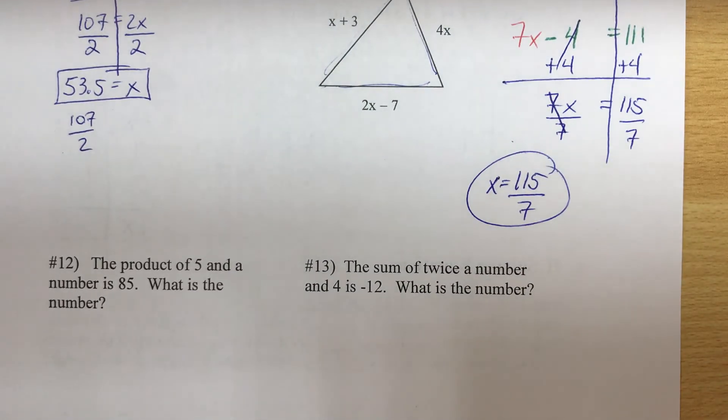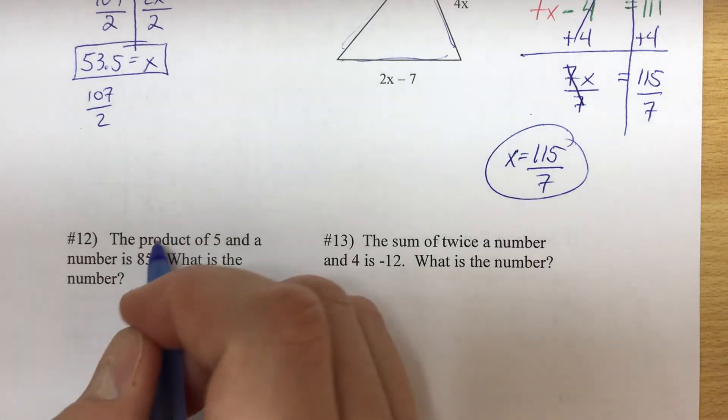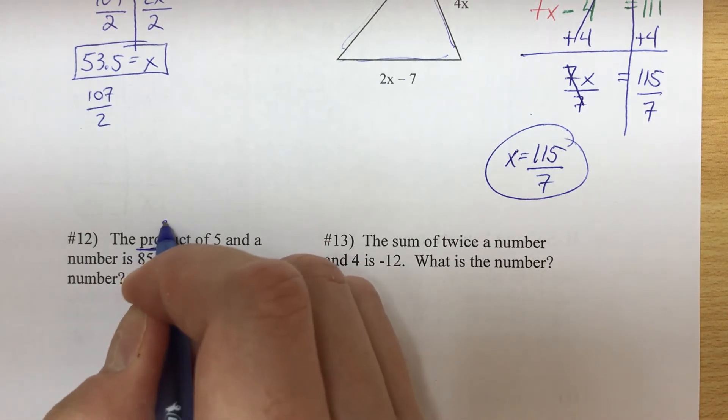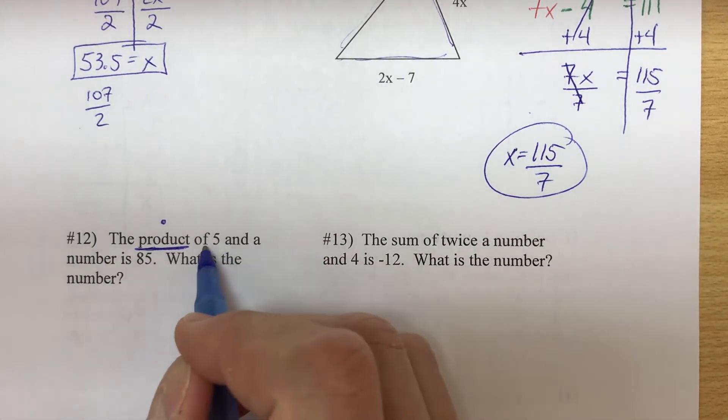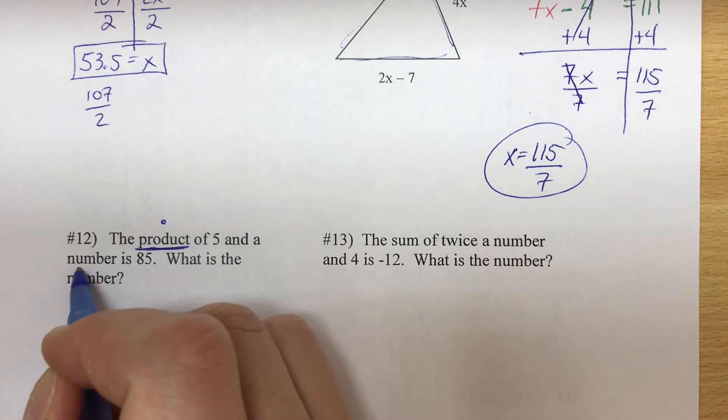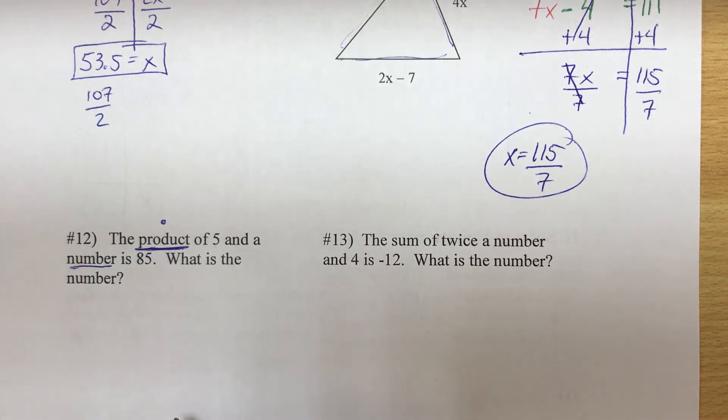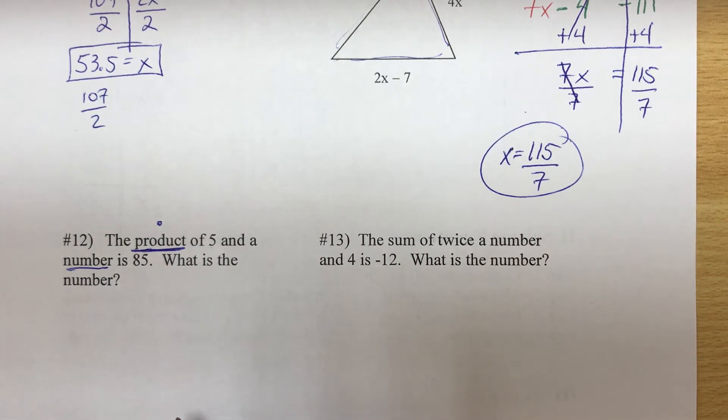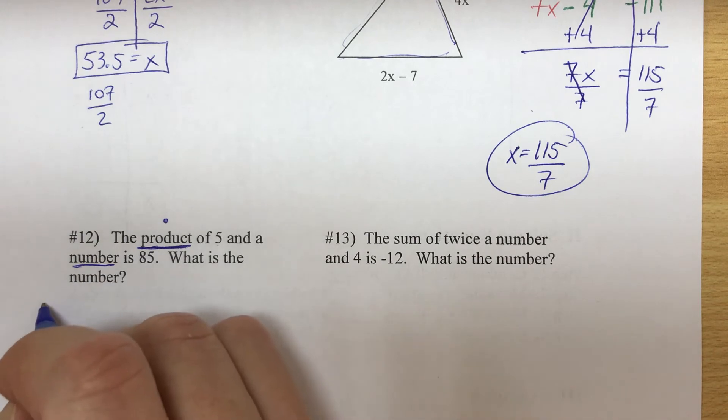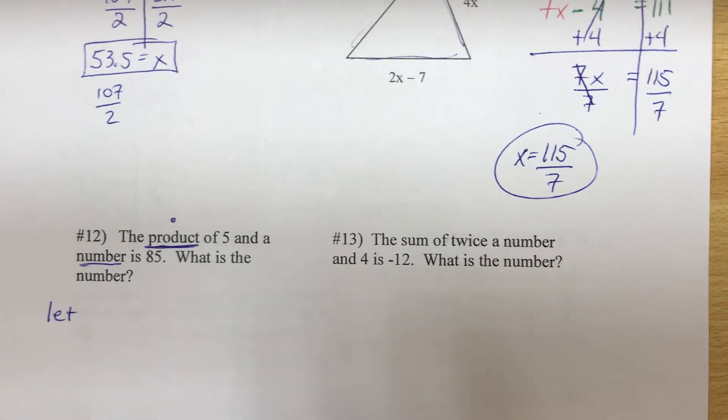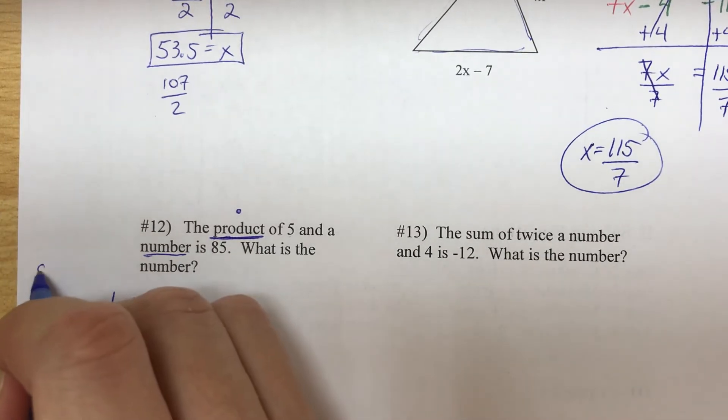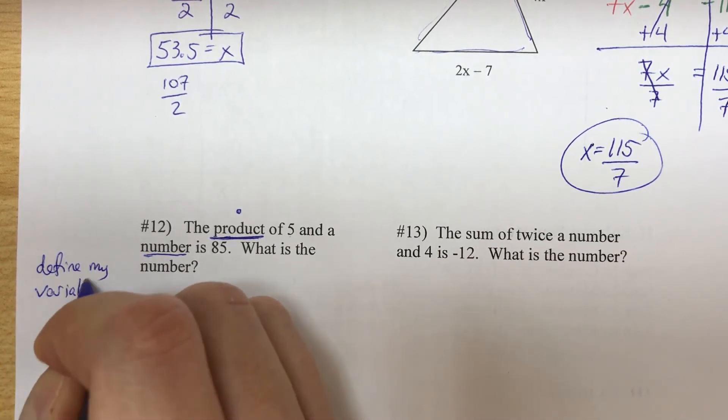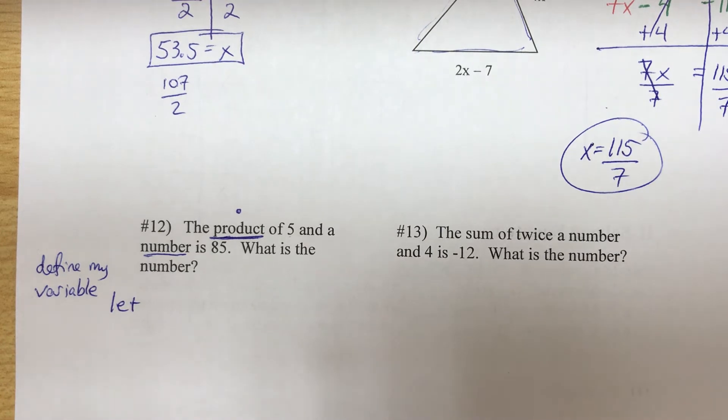Two more. Number 12: the product - now product means to multiply - of 5 and a number is 85. What is the number? Well, what I'm going to do here is called defining a variable. I'm going to define my variable. It's kind of like a definition in English class where you are saying what a word means. In this case, I am saying what a variable means.